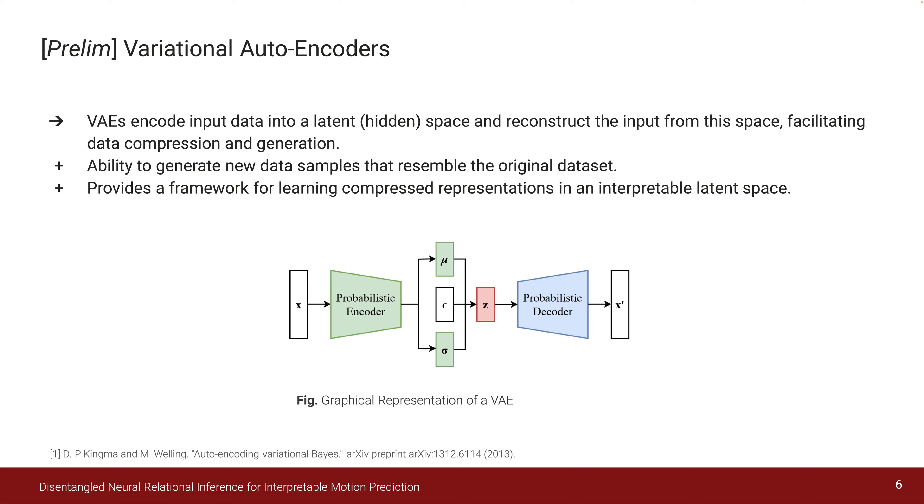The architecture of a VAE is split into two main components: the encoder, which captures the data's underlying structure and maps it into a latent space, and the decoder, which takes the latent representation and attempts to recreate the original input. This process is not just about compression—it's about understanding the data in a way that enables the model to generate new samples that closely mimic the original dataset.